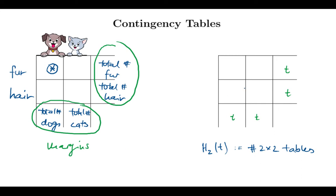How are we going to model this? A contingency table has four entries — maybe we'll call them x1, x2, x3, and x4. There are four constraints: x1 plus x2 equals t, x3 plus x4 equals t, x1 plus x3 equals t, and x2 plus x4 equals t. And each variable is a non-negative integer.